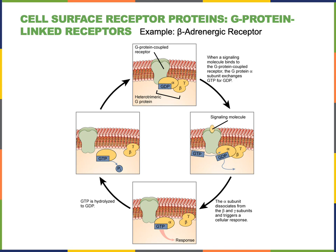G protein-linked receptors are cell surface receptors that are integral membrane proteins. They have an extracellular domain containing the binding site for the ligand — the intercellular signal, such as the water-soluble hormone epinephrine — and they also have an intracellular domain that binds to the G protein. A G protein-linked receptor has seven transmembrane domains that cross the plasma membrane, connecting the extracellular domain with the intracellular domain. When the ligand binds to the extracellular domain, it causes a change in the shape of the intracellular domain, leading to activation of the G protein.